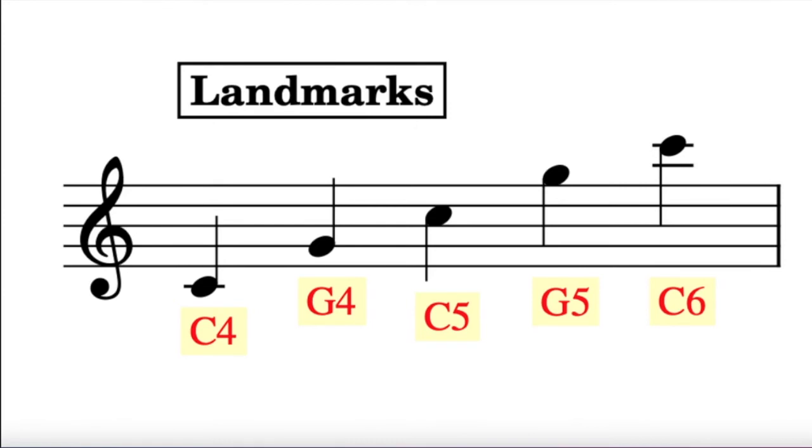A note on the space above the treble clef is a high G. This will feel high in soprano and falsetto voices. A note that sits on the second ledger line above the treble clef is a C two octaves above middle C, the C6. This will feel very high in soprano and falsetto voices.